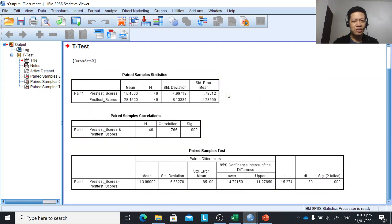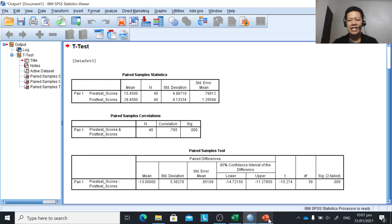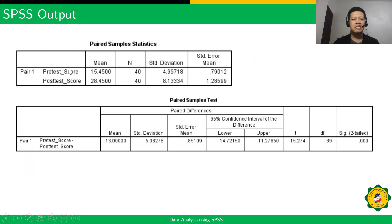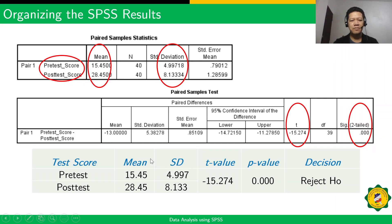This is the output from SPSS. We're now ready to convert this into a table for presentation in our manuscript. Our table should include: test score (pre-test and post-test), mean, standard deviation, the computed T value, the probability value, and our decision.